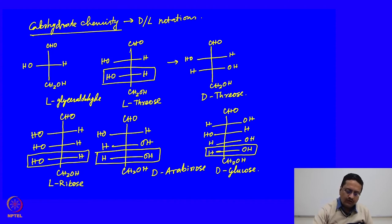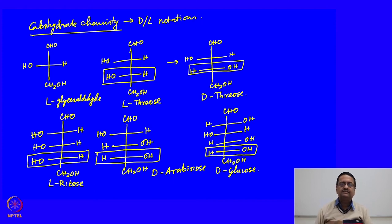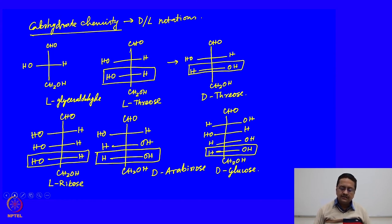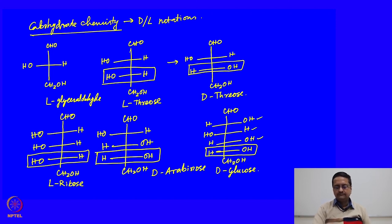By looking at one chiral center, the designation for the absolute configuration of a molecule was identified. However, this method has many shortcomings. It only signifies the chirality of one carbon atom in a compound that may have multiple chiral centers. If you have different orientations of OH or H while keeping the same OH on the right-hand side of the bottom carbon, it will still be called D-glucose, which is not correct.